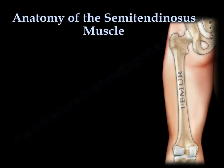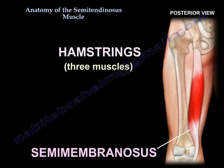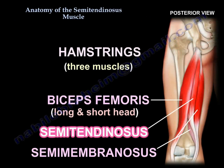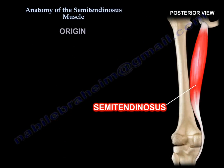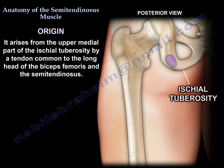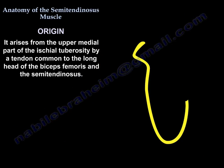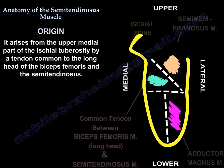Anatomy of the Semitendinosus. The origin: the semitendinosus arises from the upper medial part of the ischial tuberosity by a tendon common to the long head of the biceps and the semitendinosus.